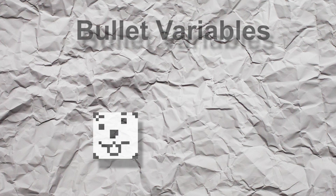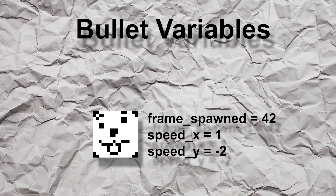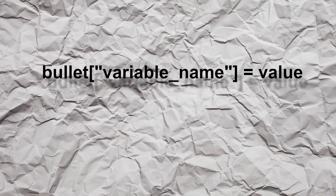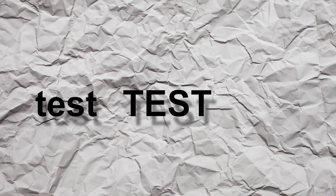The last concept I will introduce in this video is the concept of bullet variables. Each bullet can store one or multiple variables, which can be accessed later for various purposes. You can set a bullet variable using this syntax. To access it and assign it to a variable for further use, you can use a very similar syntax. All variables are case-sensitive, so 'test' isn't the same as 'Test' or 'TEST'.